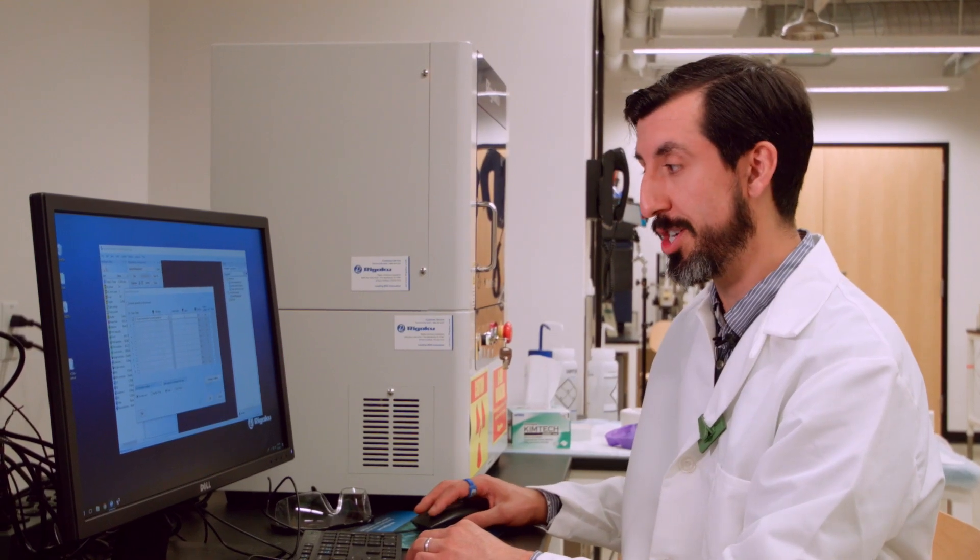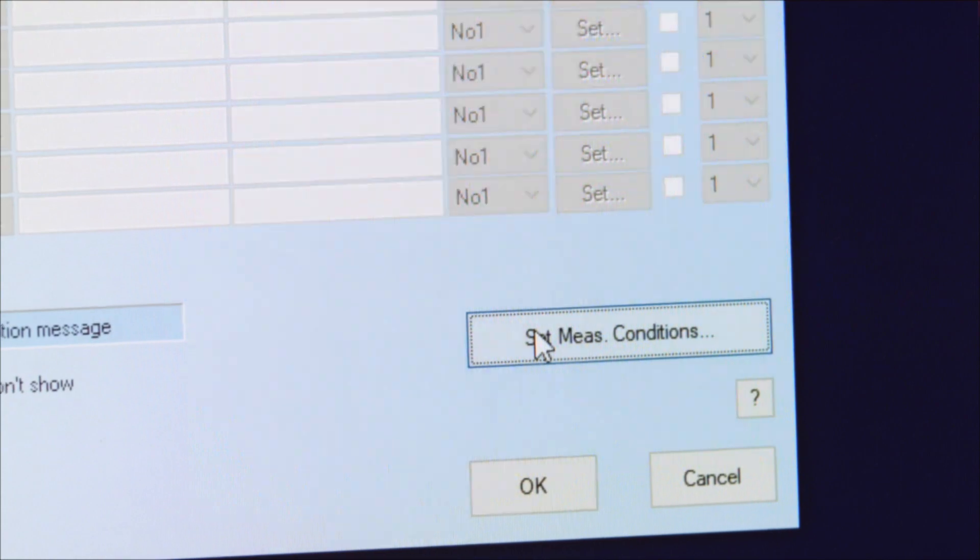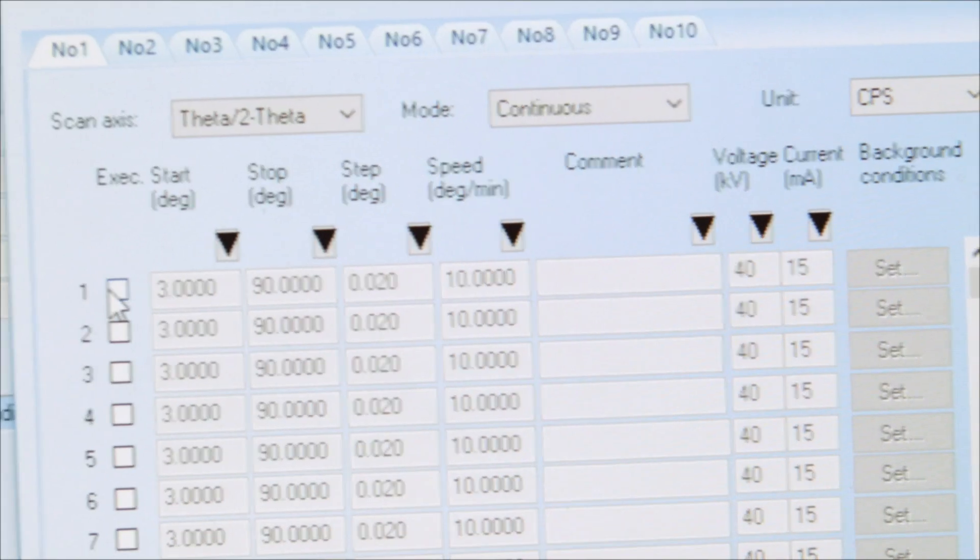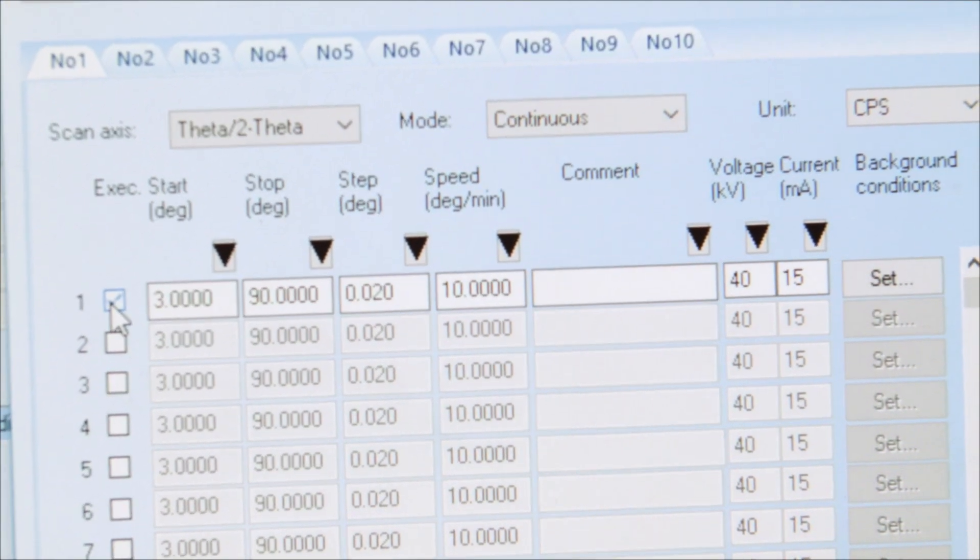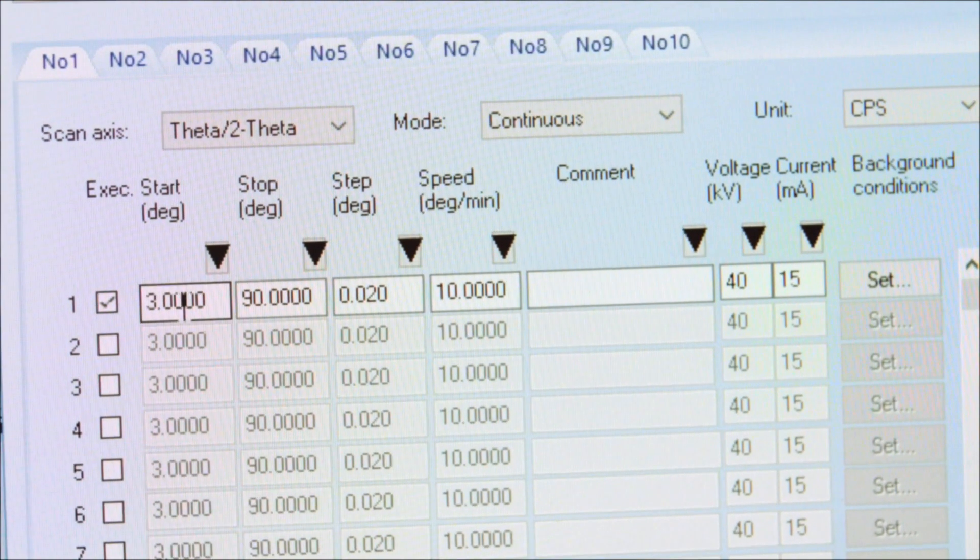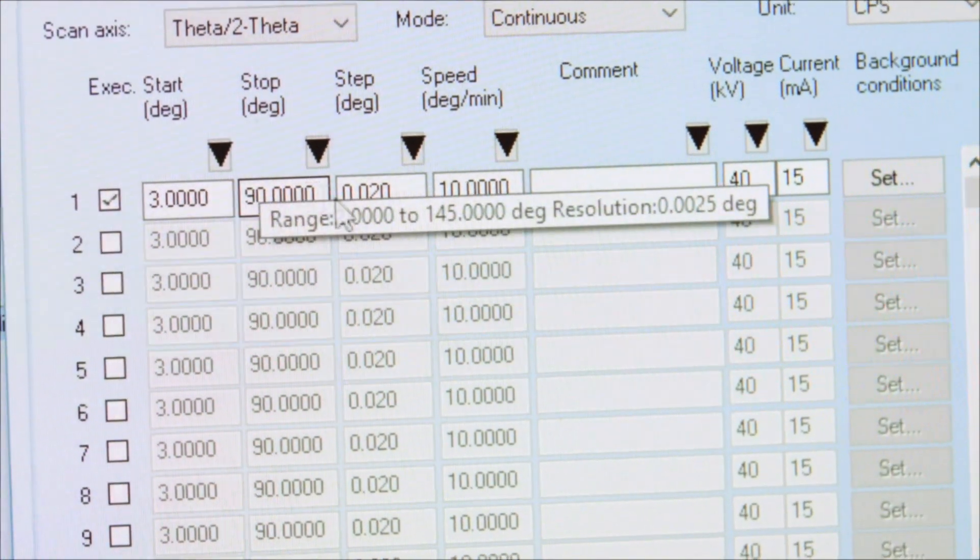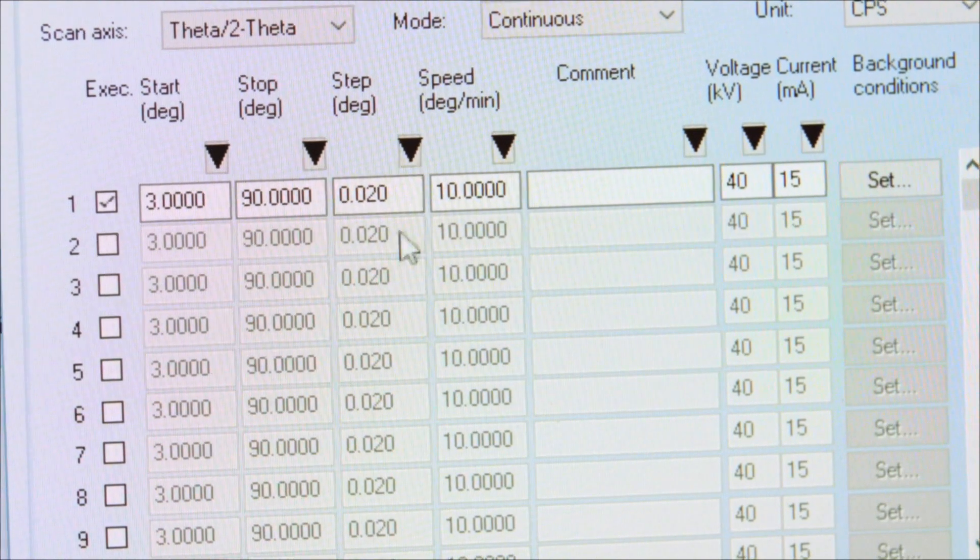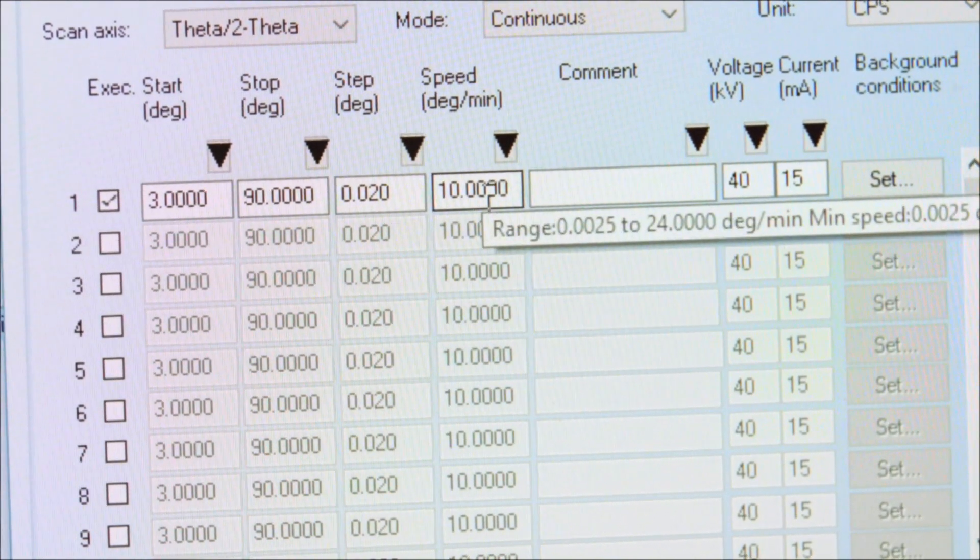Next, we're going to set the measurement conditions for the data collection. Click the Set Measurement Conditions button and check the box next to the one as we're only collecting one scan. You have the option of inputting a start degree, a stop degree, the step or resolution of the scan, and the speed of the scan.